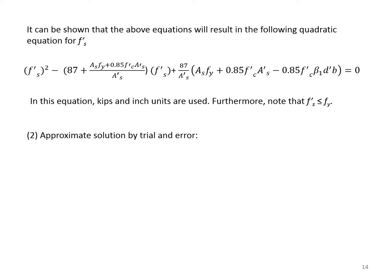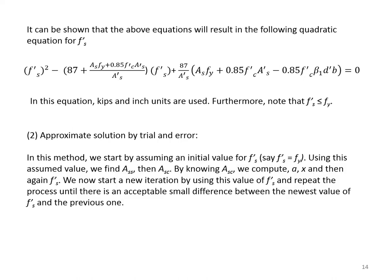The approximate solution is done by trial and error. We start by assuming an initial value for f'_s — usually we take f'_s equal to f_y. Using this assumed value, we find A_ss, then A_sc. By knowing A_sc, we compute a, x, and then f'_s again. We start a new iteration using this new value of f'_s and repeat the process until there is an acceptably small difference between the newest and previous values of f'_s.